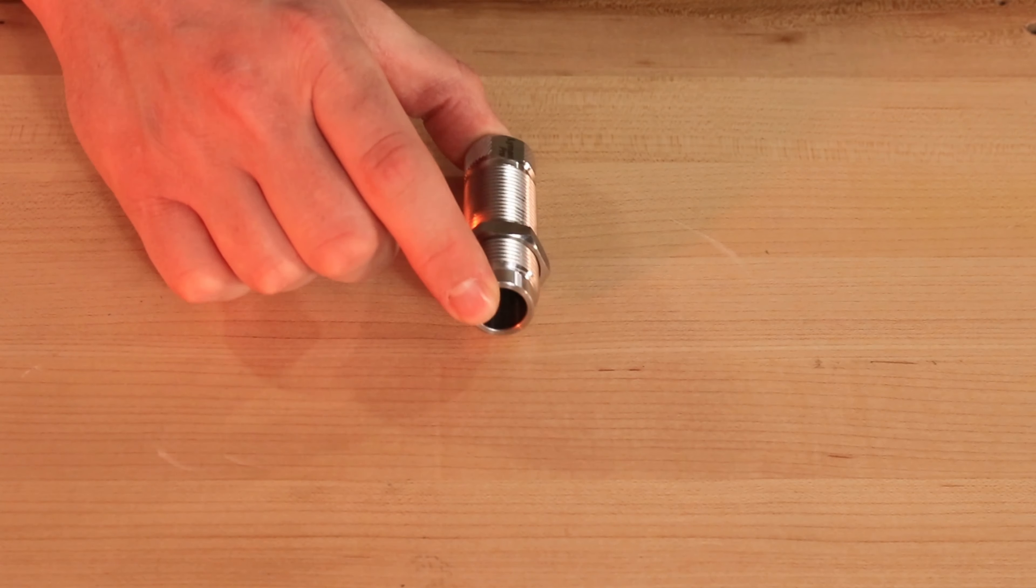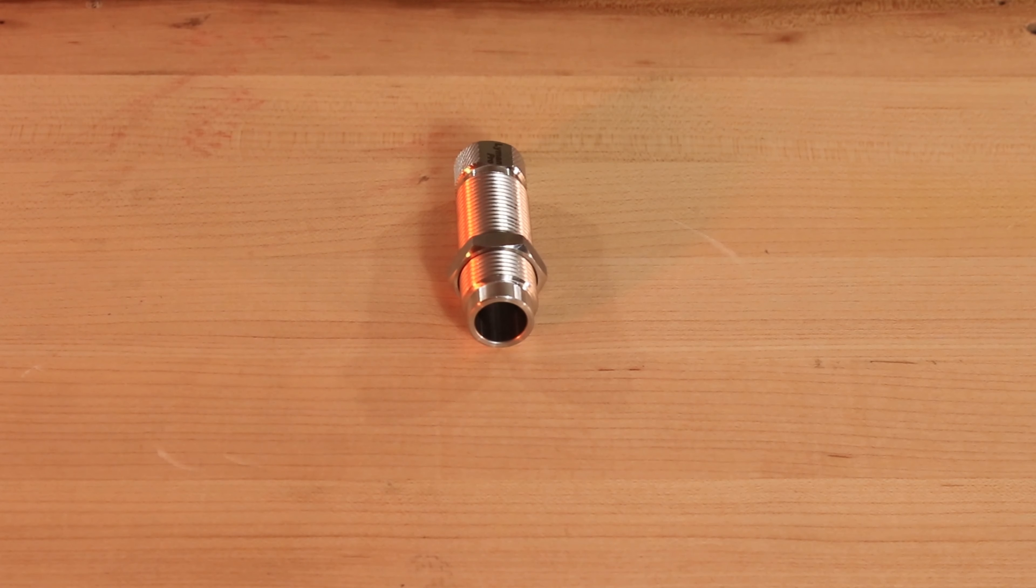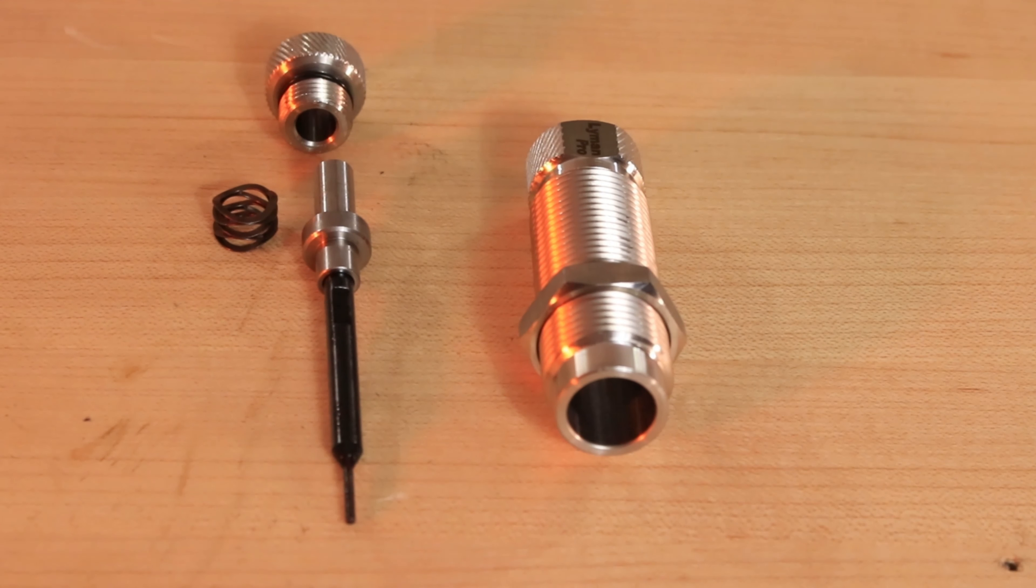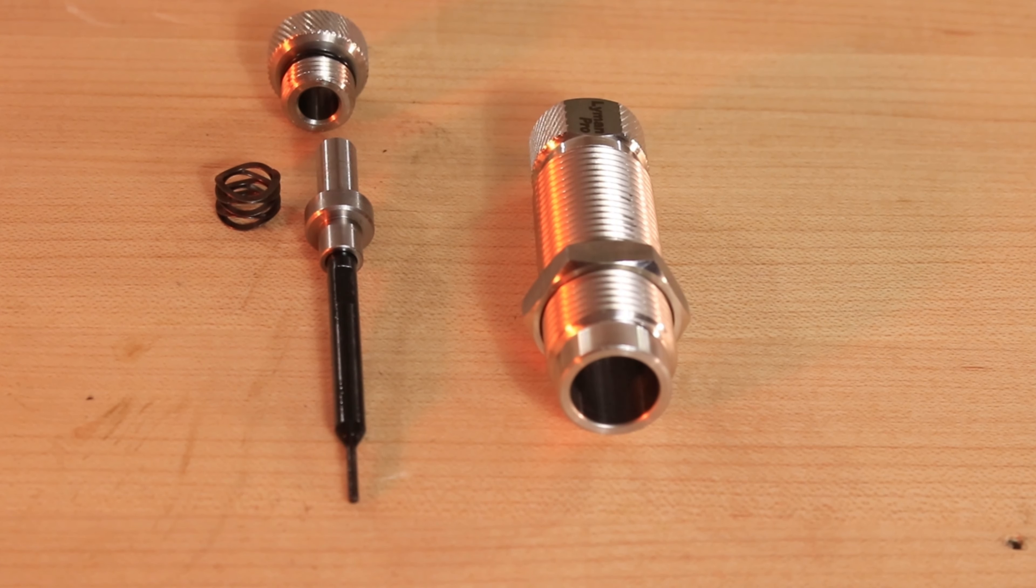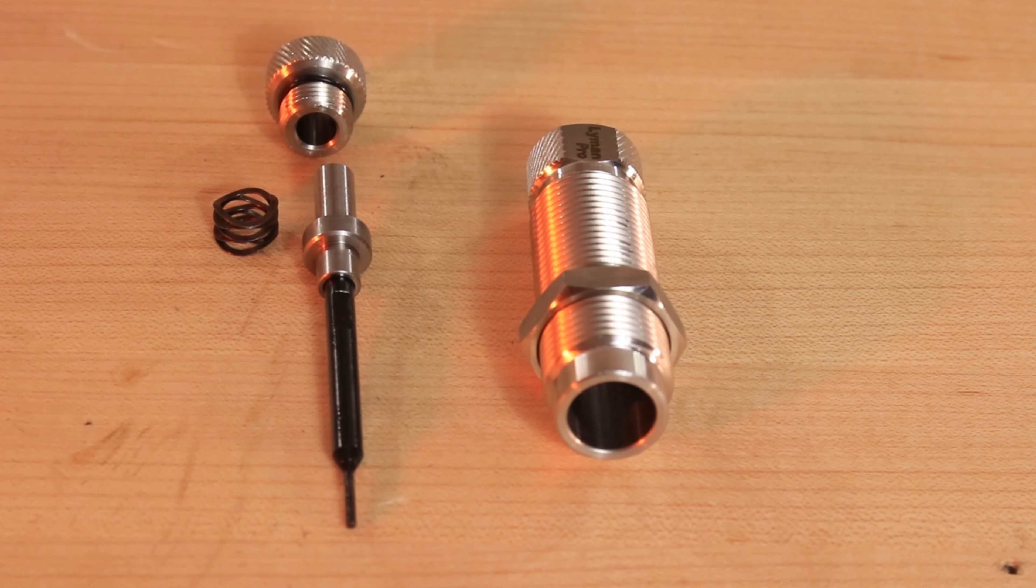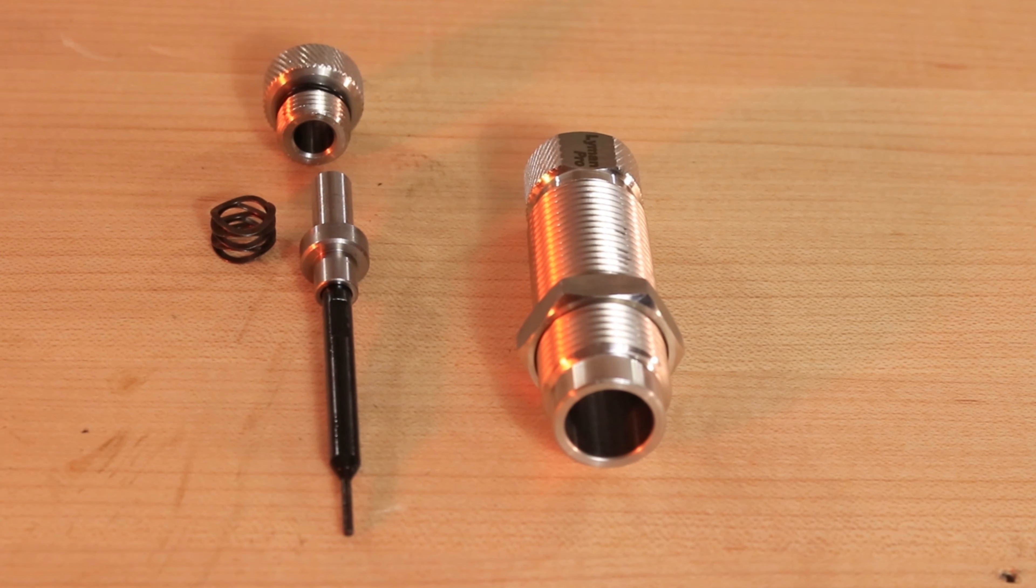What sets the Lyman Pro Sizing Die apart from the competition is they have a stainless steel body to help prevent rust, they have a spring-loaded decap pin, they have flats on the body as well as the replaceable decap rods and pins to ensure a tight fit, and they also have carbide inserts.